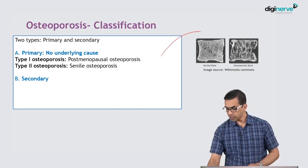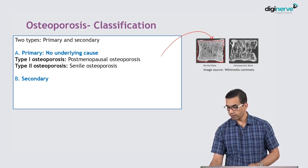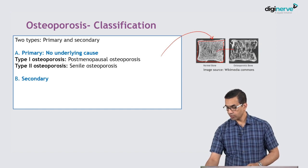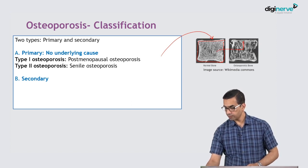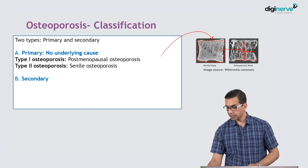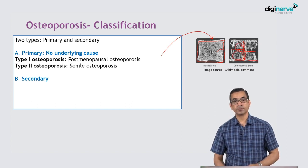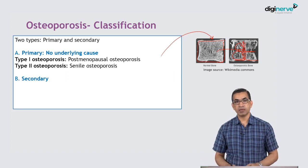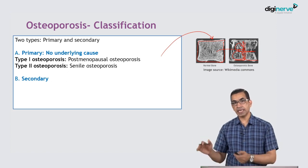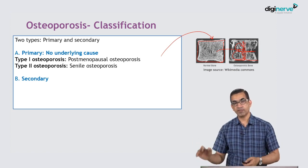If you look at this figure, this is a normal bone with normal density of microarchitecture. In per unit area — if you divide into 4 coordinates — the amount of bone is less in osteoporosis. The quality may be okay, but the quantity itself is far less.